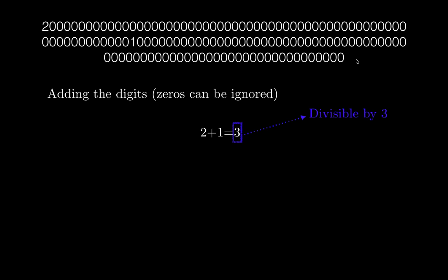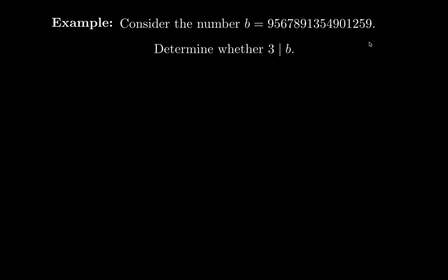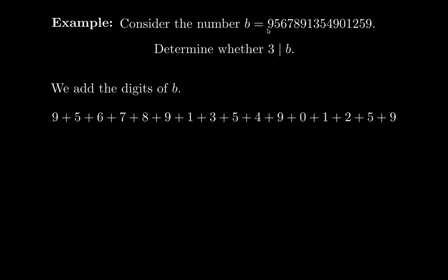That was the whole point of the example. Now let's look at another example and practice a little more. Suppose you have another number and we want to check if 3 divides it. We need to add the digits: 9 plus 5 plus 6 and so on, all the digits. If you add all of them, you get 83. Whether or not 3 divides B depends on whether 83 is divisible by 3.